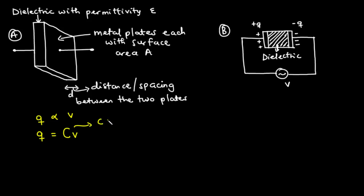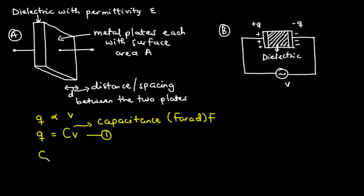Removing the proportionality sign and introducing an equals sign, we get Q = C × V, where C is the proportionality constant called the capacitance of a capacitor, measured in Farads. This is our first equation. From this we can also write C = Q / V, defining capacitance as the ratio of the charge on one plate to the potential difference between the two plates.